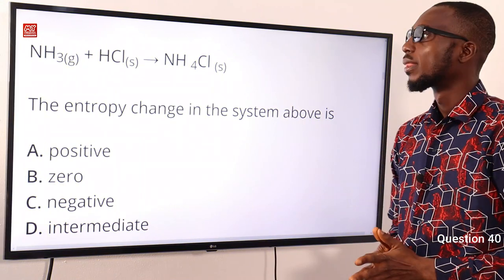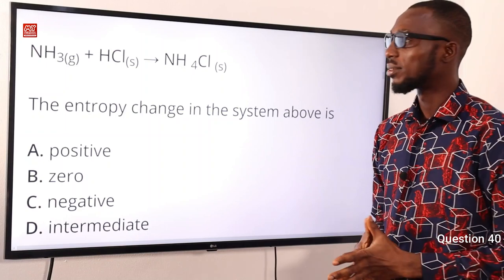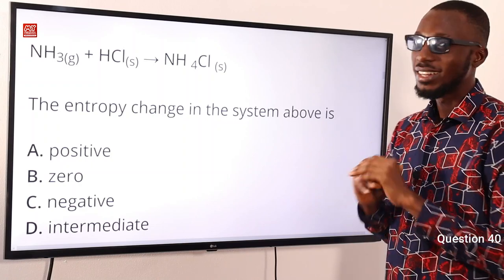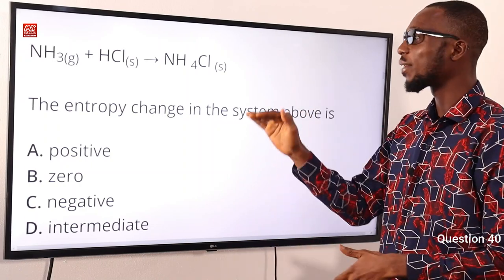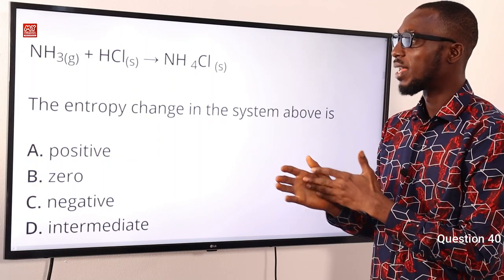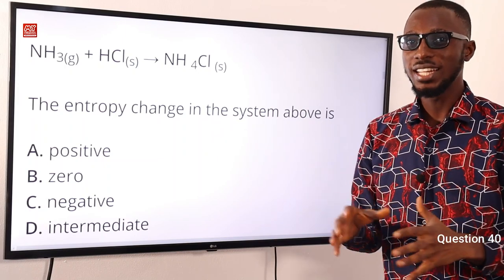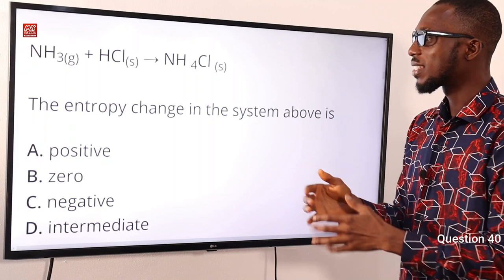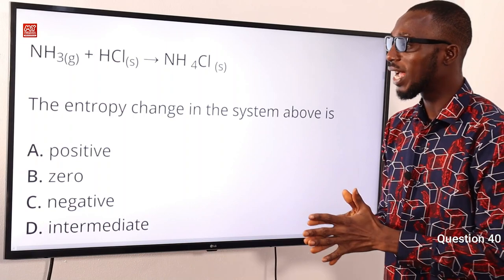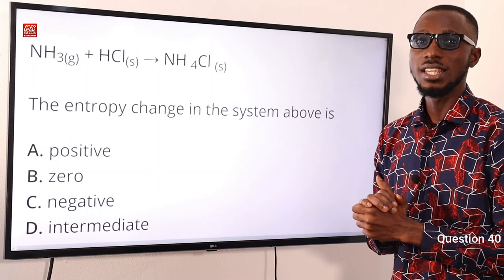Question 40: For the reaction NH₃ + HCl → NH₄Cl, the entropy change in the system is what? Entropy refers to the degree of disorderliness. This is an exothermic reaction — the reverse would be endothermic. Two gaseous molecules combining into one solid compound means disorder decreases. So the entropy change is negative. The correct option is option C — entropy change is negative.